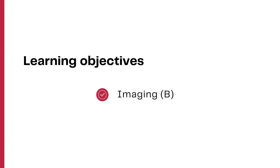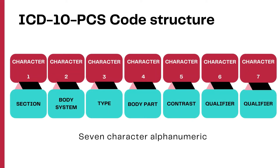At the end of this learning session, we will have a better understanding of coding from the imaging section of the ICD-10-PCS. There are seven characters in this section: the first is the section itself, the second is the body system, the third character is for the type of imaging performed, the fourth is for the body part, the fifth is for the type of contrast used, and the sixth and seventh characters are qualifiers which provide additional information.